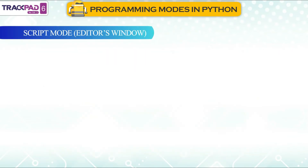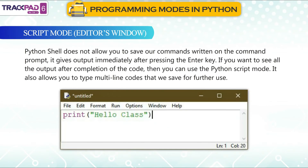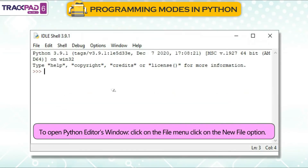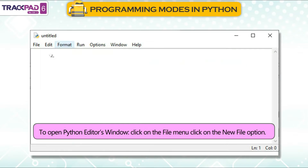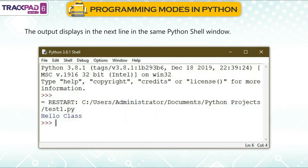Script mode uses the editor's window. The Python shell does not allow you to save commands written on the command prompt and gives output immediately after pressing Enter. If you want to see all the output after completion of the code, you can use Python script mode, which also allows you to type multi-line code that can be saved for further use. To open the Python editor's window, click on the File menu and then click on New File.